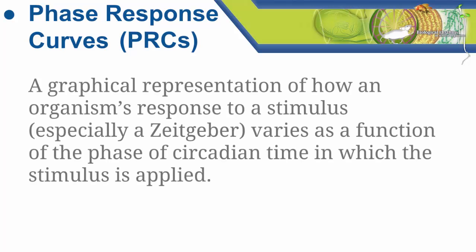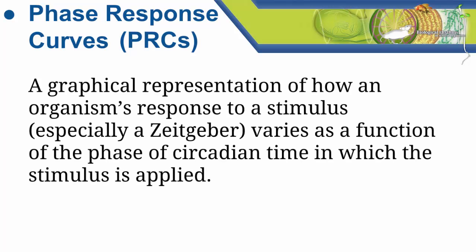A PRC is a graphical representation of how an organism's response to a stimulus, especially a stimulus which is a Zeitgeber, varies as a function of the phase of circadian time at which the stimulus is applied.